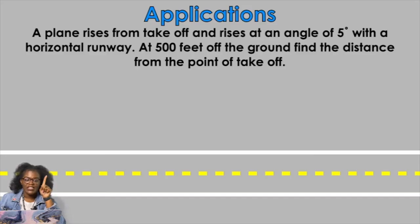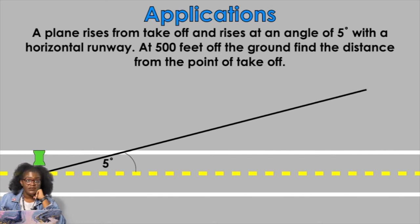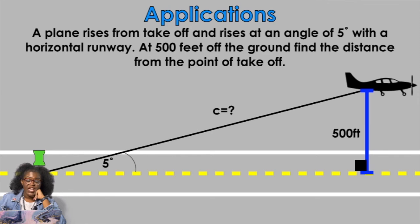Last but not least, a plane rises from takeoff and rises at an angle of 10 degrees with a horizontal runway. At 500 feet off the ground, find the distance from the point of takeoff. So let's draw a picture. 5 degrees. This is where the point is. This is our little plane. It rises off the ground, and that is 500 feet. I want to find the distance from the point of takeoff. So from the push pin to the plane. So looking at the 5 degree angle, 500 is what? Opposite, adjacent, or hypotenuse?